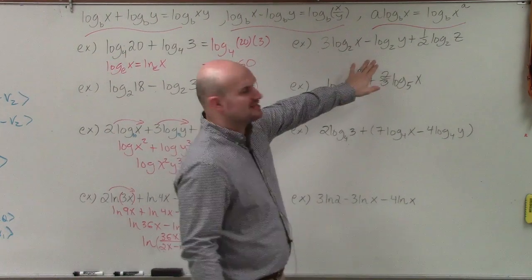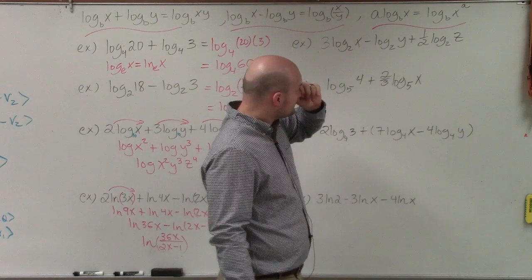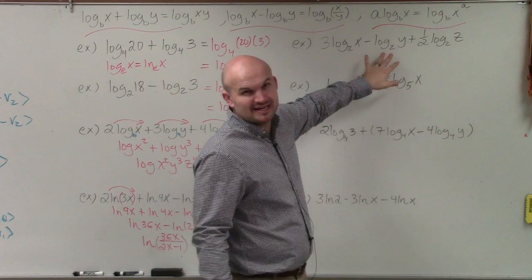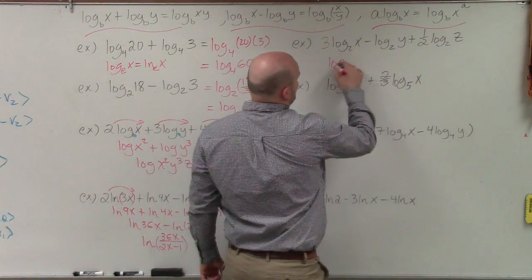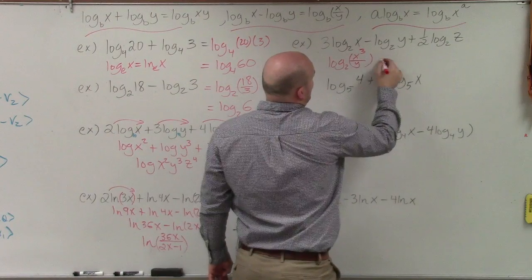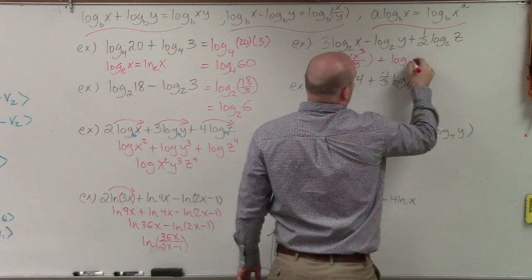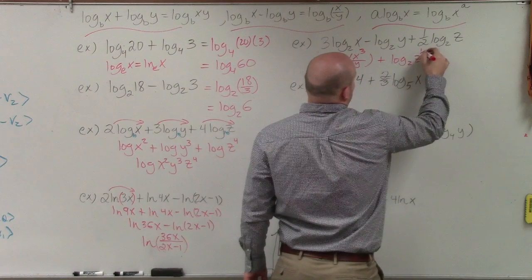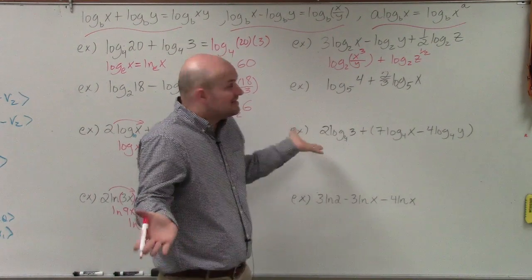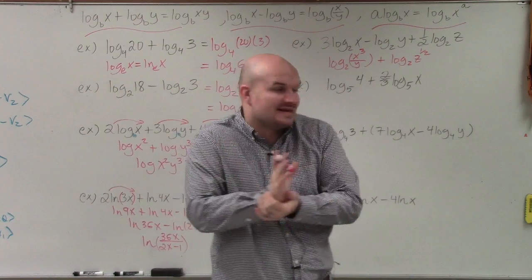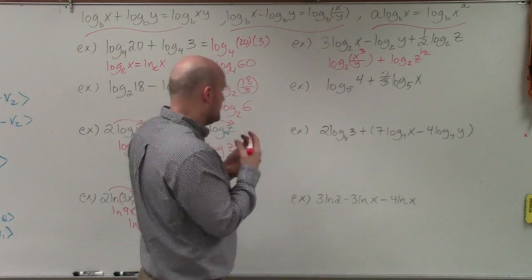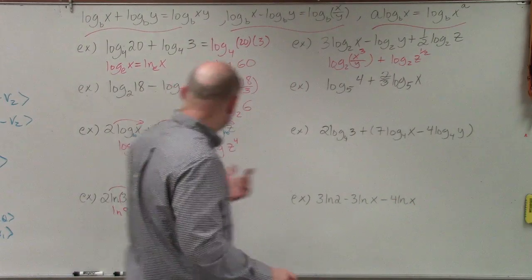Let's simplify this next one. First, let's bring up our powers and then divide. This can be written as log base 2 of x cubed divided by y, plus log base 2 of z to the one-half power. I applied the quotient property and moved the 3 up. Now we can combine these by multiplication — it's important to understand that z to the one-half power is the same thing as using a radical.